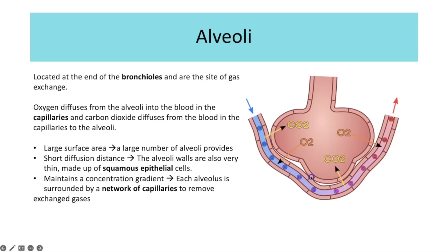The alveoli are located at the end of the bronchioles and are the site of gas exchange. Oxygen from the alveoli diffuses into the blood and is picked up by red blood cells, while carbon dioxide in the capillary diffuses into the alveoli and is exhaled. The large surface area is provided by the very large number of alveoli in both sets of lungs — one alveolus doesn't have a large surface area, it's the fact that there are millions of them.